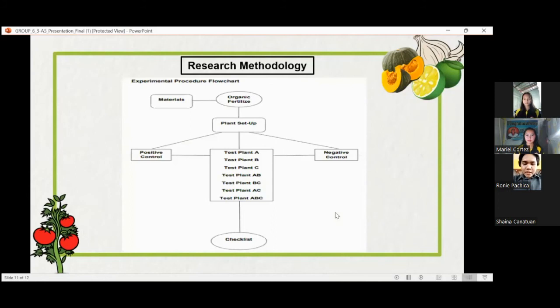For the flowchart, using the materials such as squash seeds, garlic peels, and calamansi rinds in making the organic fertilizer. After creating the organic fertilizer, the researchers will be implementing a plant setup of nine test plants. We have the positive control having no fertilizer. The negative control will be applied with synthetic fertilizer. While test plants A, B, and C in various combinations will be applied with organic fertilizers. Total data will be recorded in a checklist and gathered data will be interpreted through a statistical treatment tool.